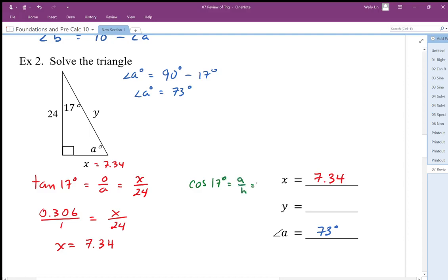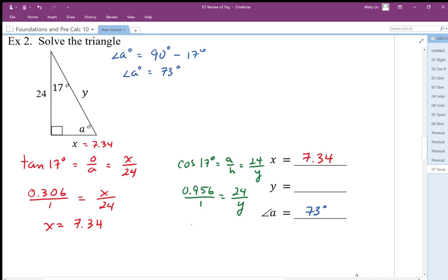Cosine of 17 degrees is adjacent over hypotenuse, which is adjacent side is 24 and hypotenuse is y. So I need to convert that cosine of 17 into a cosine ratio. So cosine of 17 degrees is 0.9563, and that's always to 1. And so the adjacent is 95% the length of the hypotenuse, so the hypotenuse should just be a little bit bigger than 24.